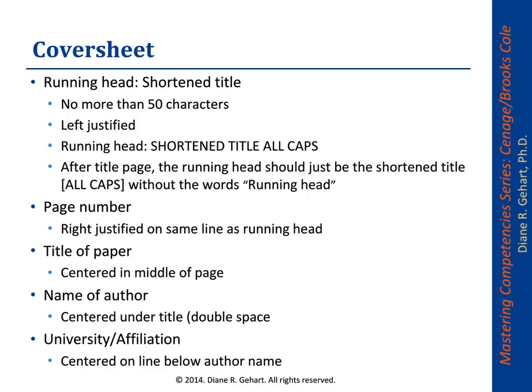The first thing on the cover sheet is something called a running head — a shortened title of no more than 50 characters. Its purpose is so that if anyone has dropped the manuscript on the floor and it's not stapled, you can put it all back together. The running head is left-justified. On the first page, you write out 'Running head,' colon, and then in all caps you put whatever that shortened title is. After the title page — using a different first page header setting in Word — the running head is shortened to just the title without the words 'running head.'